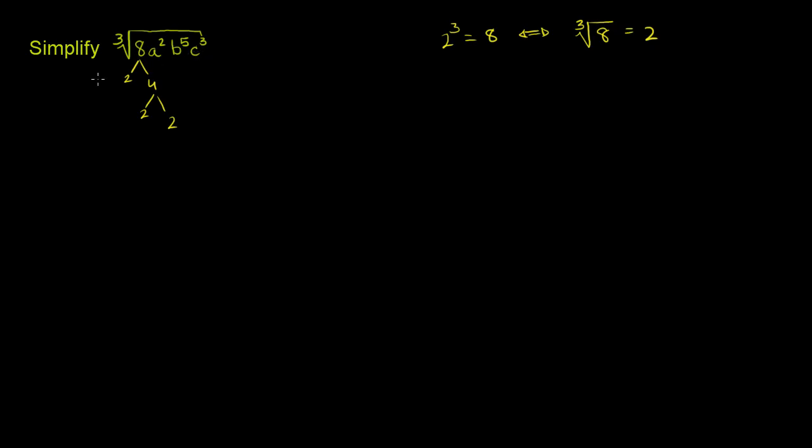Let me rewrite the radical. I'll leave the 8 the way it is because it's a perfect cube already. And then let me focus on a²—I'm not going to really be able to factor that into a to the third times something else.